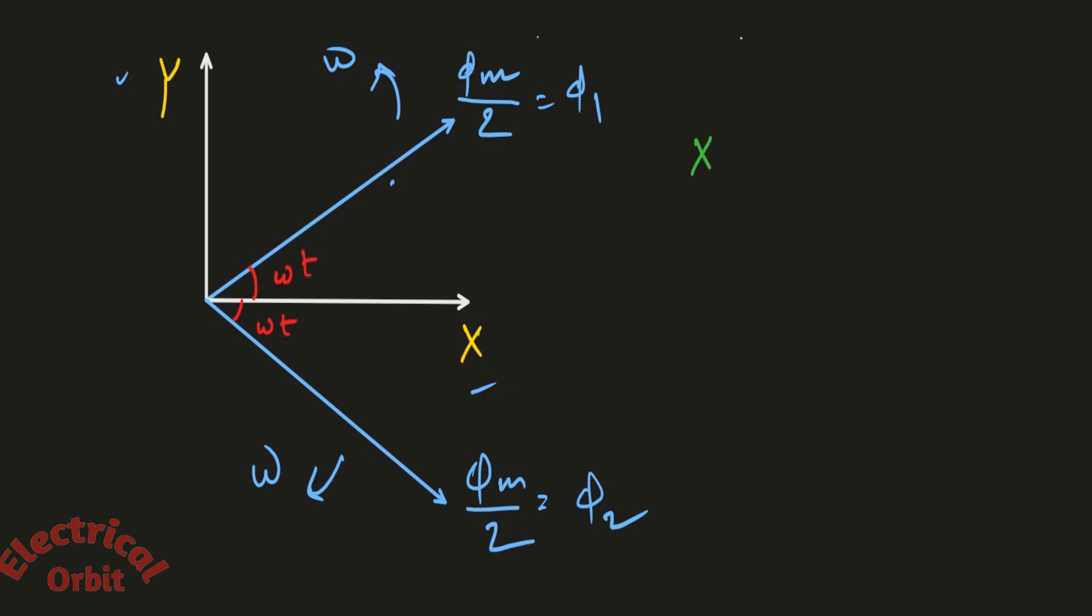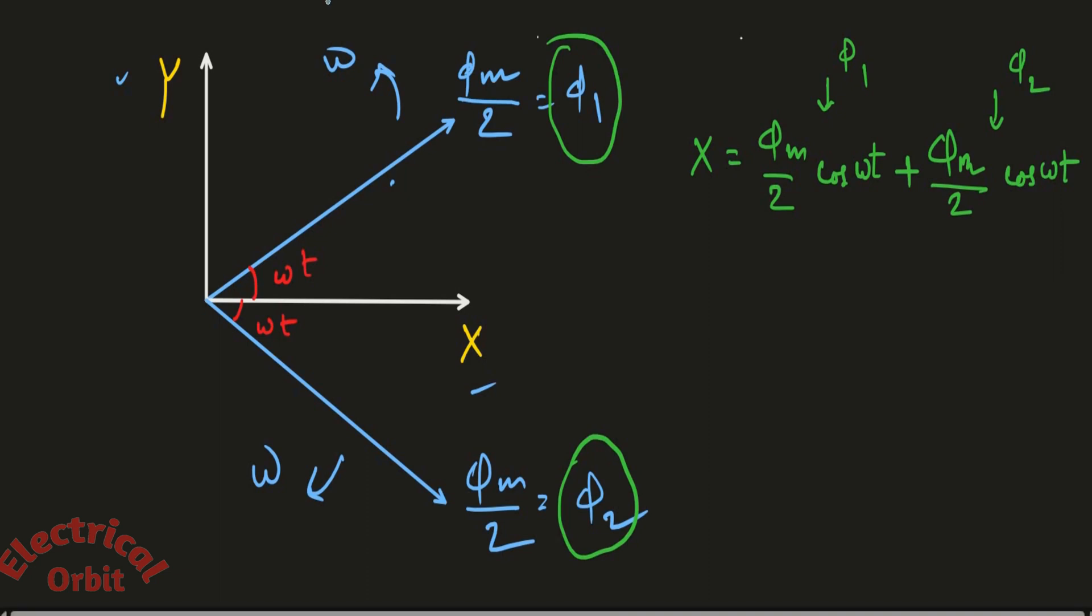So what are we getting? If we get the X component, that is equal to Φ_M/2 cos(ωt) plus Φ_M/2 cos(ωt), because this Φ_1 and Φ_2 is giving a horizontal x-axis, that is cos(ωt) component. So you can consider this as Φ_1 and this as Φ_2. So now if we take the vertical component, what will be the vertical component? It will be Φ_M/2 sin(ωt) and similarly for Φ_2 it is Φ_M/2 sin(ωt). See, these are opposite to each other.